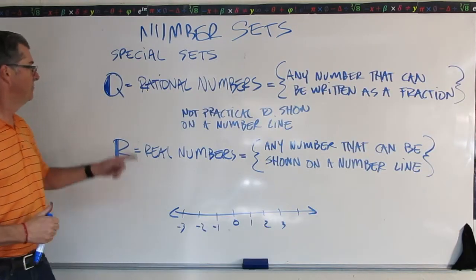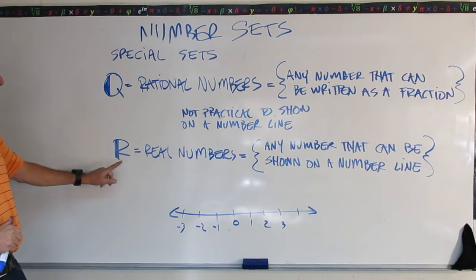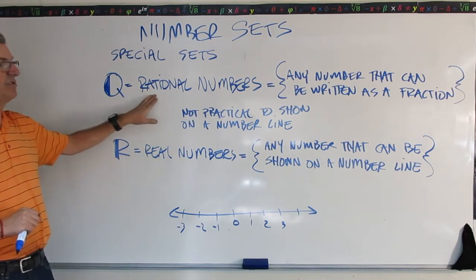The last two sets. We've got Q, rational numbers, and R, real numbers. So let's take a look at the rational numbers.